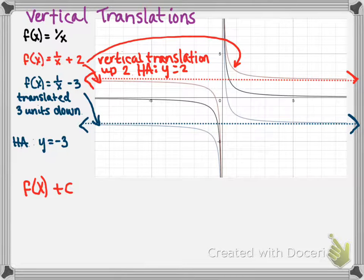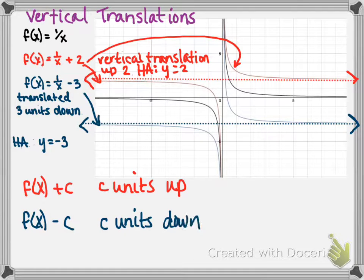As a generalization, f of x plus c is translated c units up. f of x minus c is translated c units down.